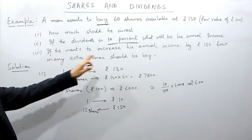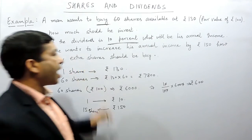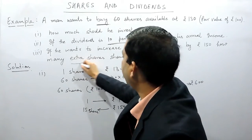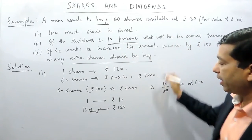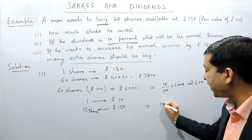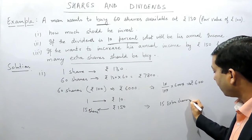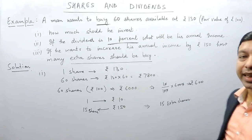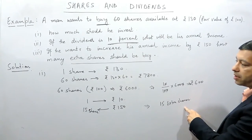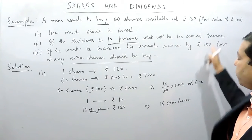Here the only aspect they have asked is how many extra shares should he buy, so here he should buy 15 extra shares. That means instead of 60 shares he should buy 75 shares for his annual income to be increased by rupees 150.